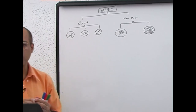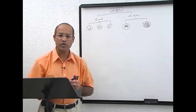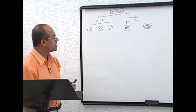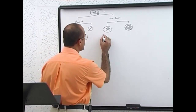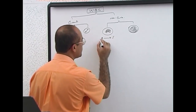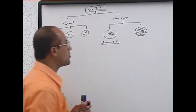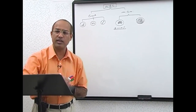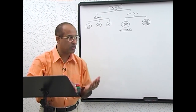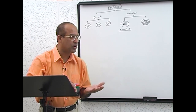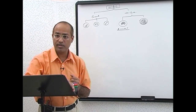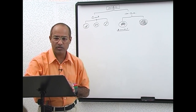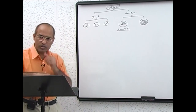Now let's talk about monocytes. Monocytes are also produced in the bone marrow, and their percentage in the blood is somewhere between 2 to 10%. Monocytosis will occur when the percentage of monocytes out of all white cells in the blood is more than 10%. Monocytosis occurs especially in chronic infections or chronic inflammations.